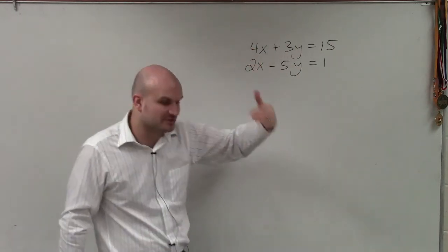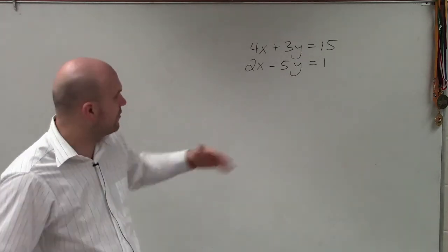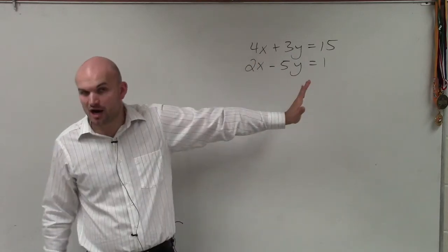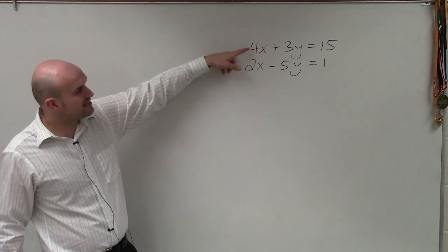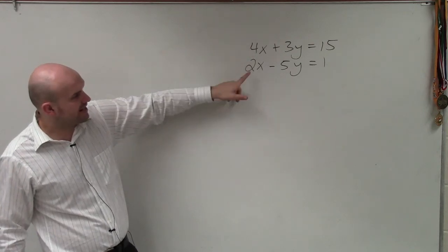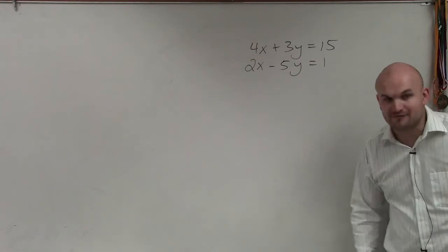Now there is one thing I do want to make sure: that when we're doing this, we want to make sure that our x's and our y's are aligned, which in this case they are. So therefore, I can verify that, okay, yes, the x's - this has a coefficient of 4, that has a coefficient of 2. This has a coefficient of 3, that has a coefficient of negative 5. They're not the same.